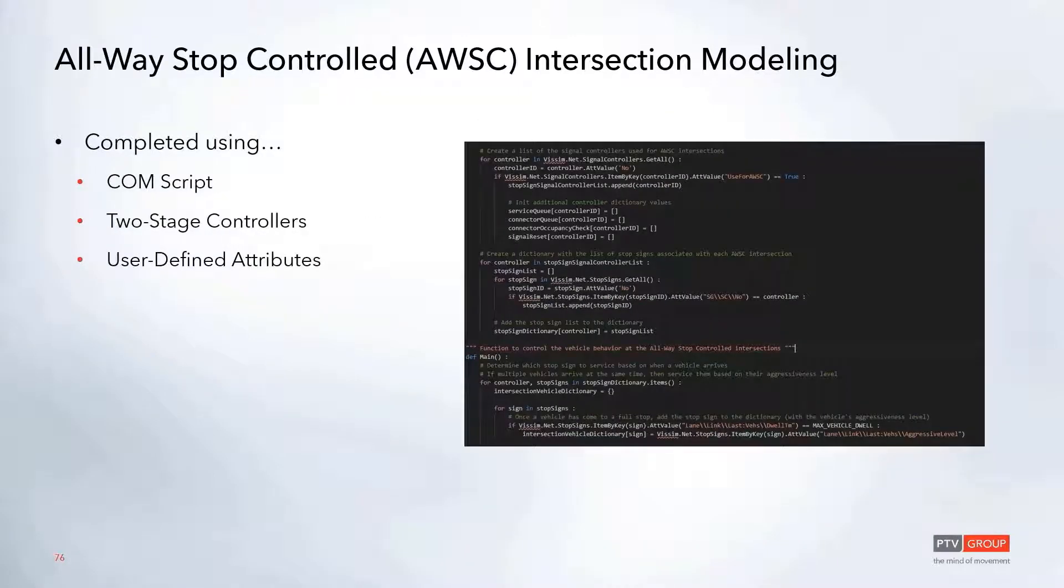For this approach, we did end up using just a small COM script in order to control the vehicles and be able to place them into a queue to determine which vehicle should get serviced first. And then we also took advantage of those two-stage controllers so that we could hook up each stop sign to a signal and turn it on or off. We also took advantage of different user-defined attributes within VISSIM itself.